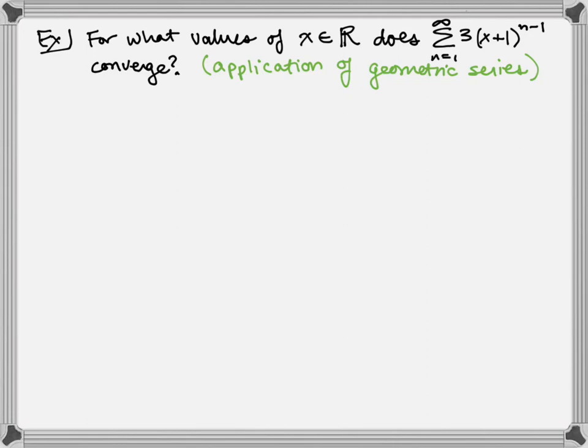So that means we have (x+1) to the 0, (x+1) to the first, (x+1) to the second, which means we've got a geometric series staring us in the face here.